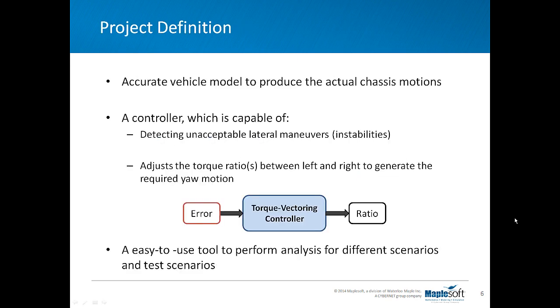A quick review over the available torque vectoring controllers shows that different algorithms and hardware setups were employed by different manufacturers. Some of them only changed the left to right ratio of the rear axle while the front to rear ratio was also considered in the others. This project was divided into following steps: building a vehicle model, adding a controller to it, and creating an easy to use tool for analysis purpose.